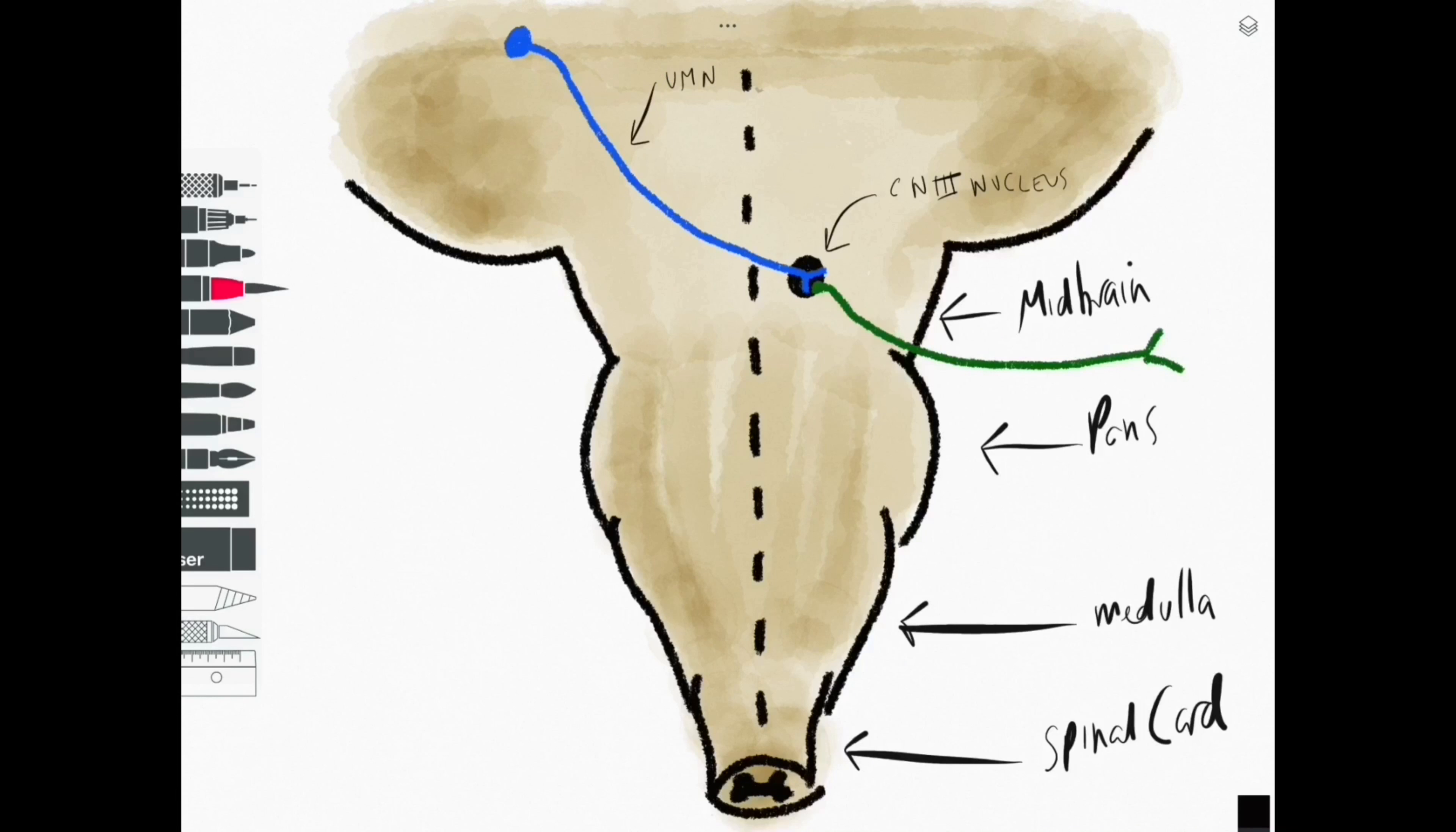But for now we just need to worry about the basilar artery and the pontine arteries supplying regions of the pons.